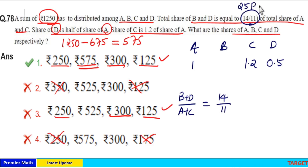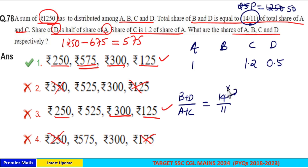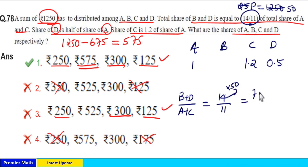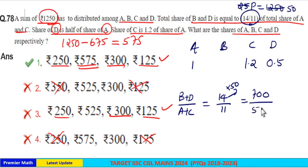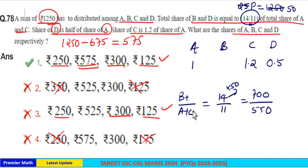The 25 parts total is given as 1250 in the question, which means 1 part equals 50. Therefore, 14 parts equal 14 × 50 = 700, and 11 parts equal 11 × 50 = 550. Now b + d equals b + 0.5, and a + c equals 2.2.